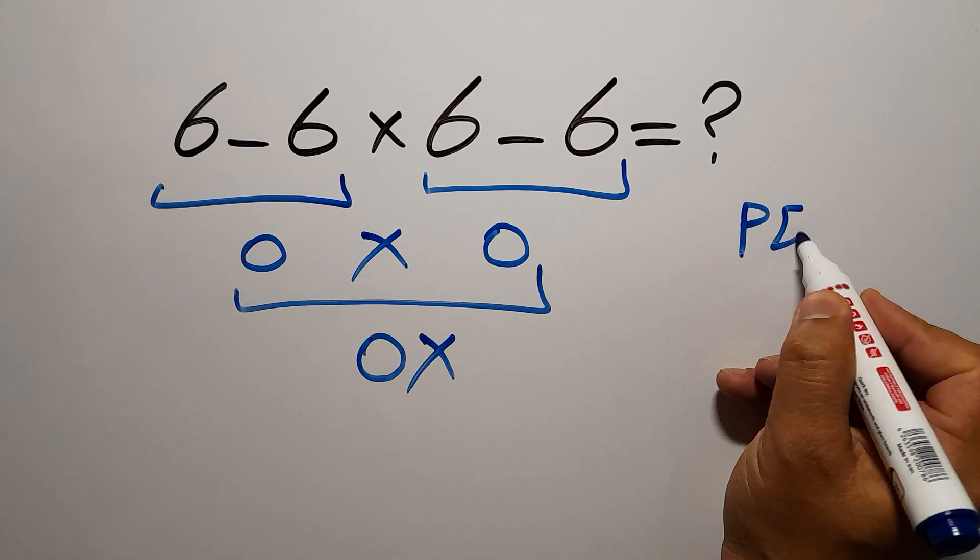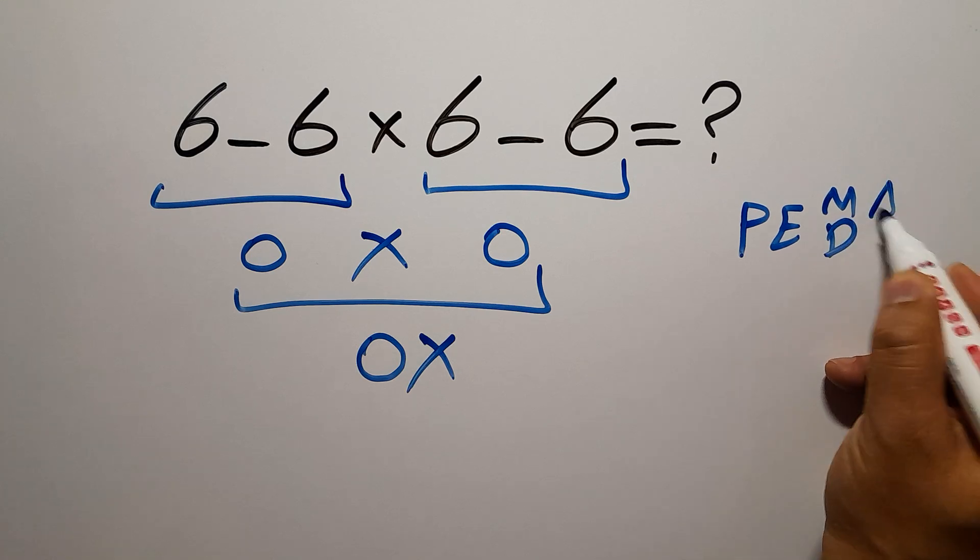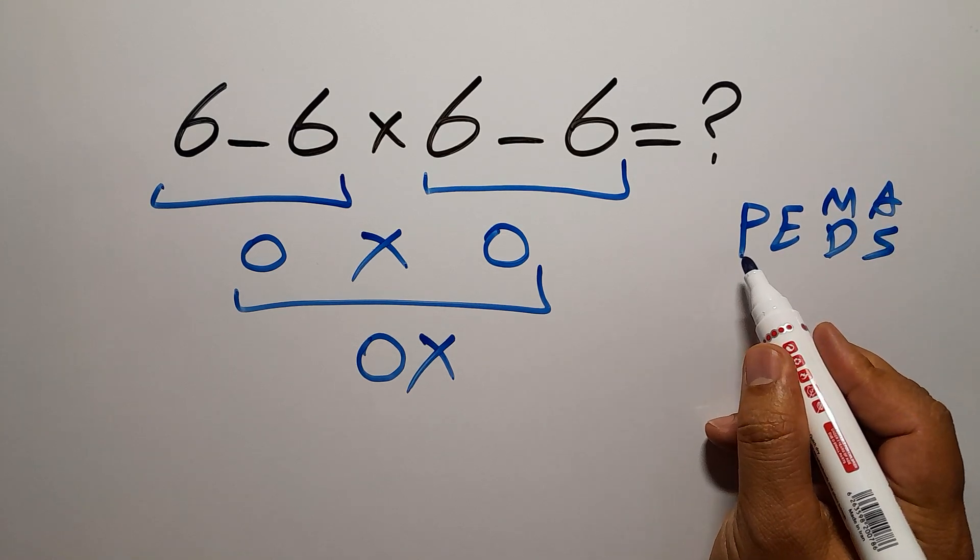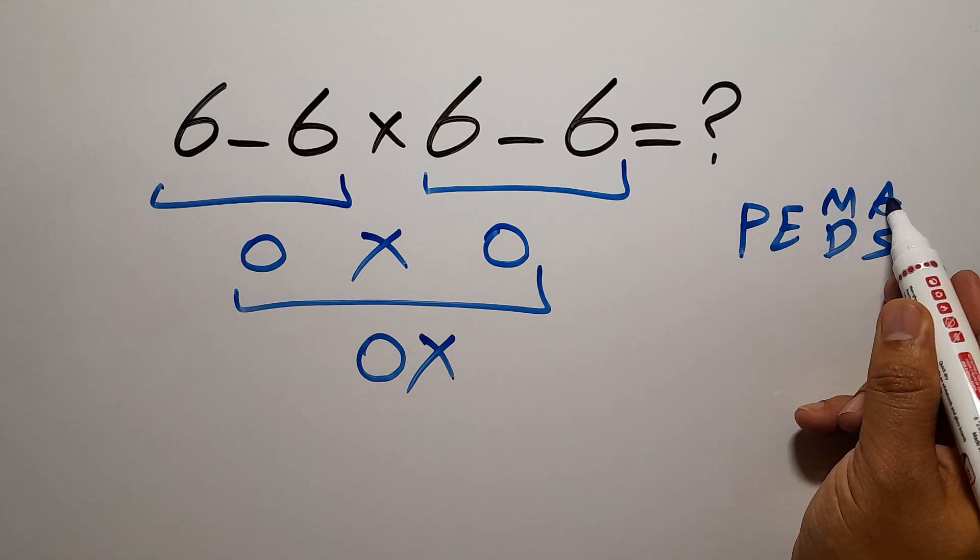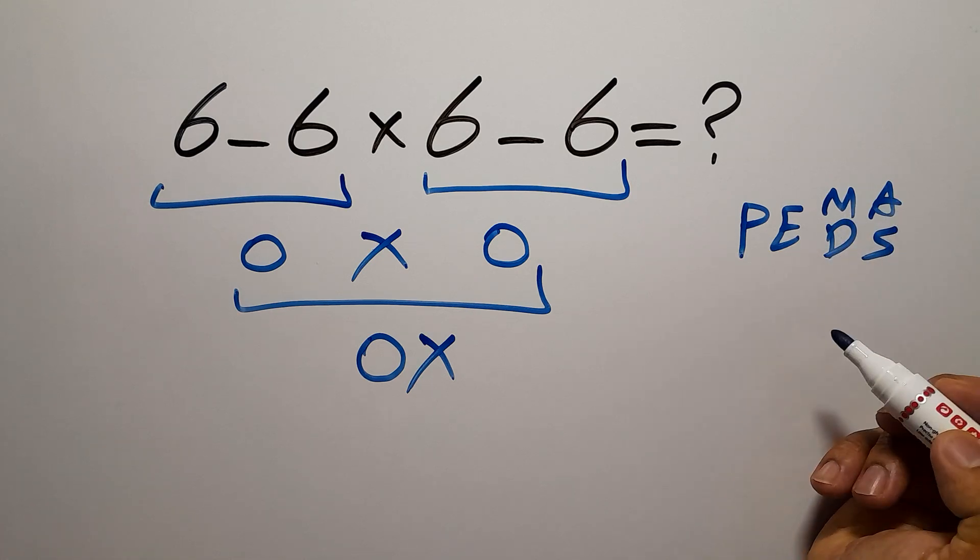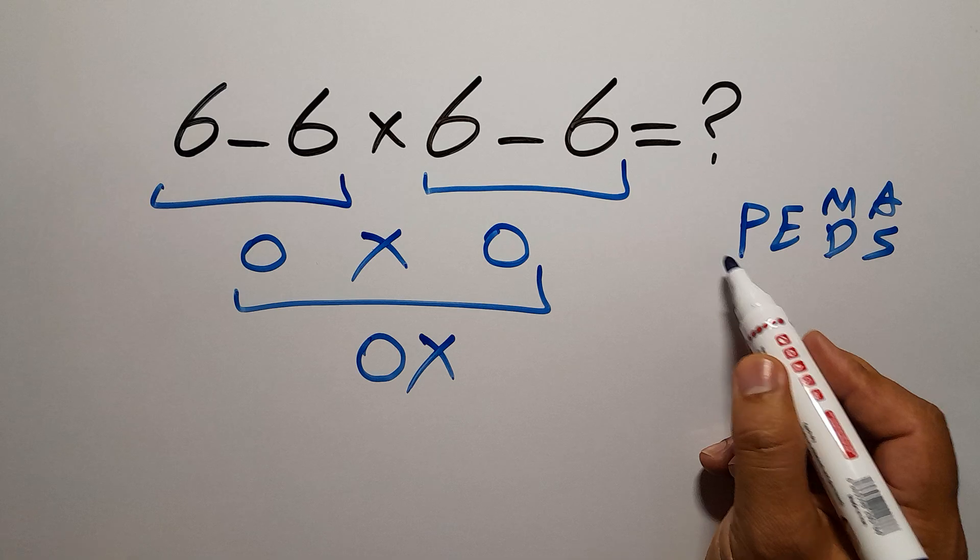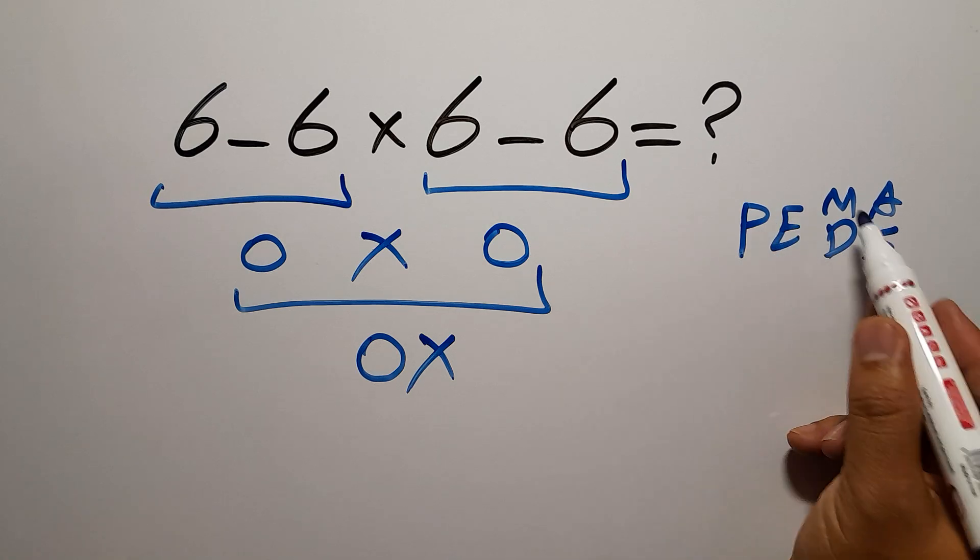which is PEMDAS: P stands for parentheses, E stands for exponents, M and D stands for multiplication and division, and A and S stands for addition and subtraction. First we have to do parentheses, then exponents, then multiplication or division, and finally addition or subtraction.